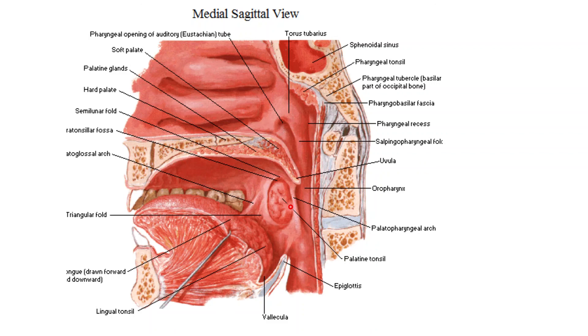This is all about Waldeyer's ring, which is seen in the interior of the pharynx. Thank you.